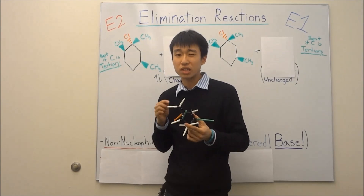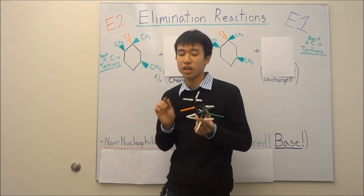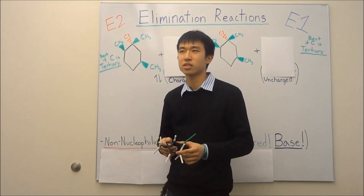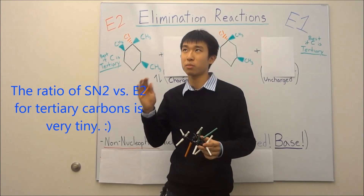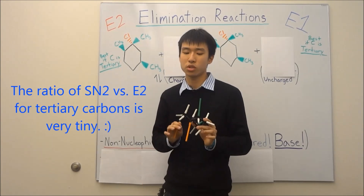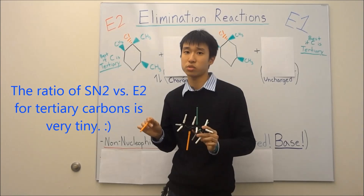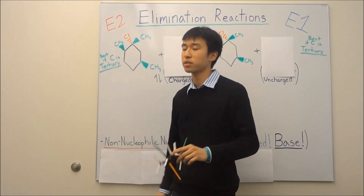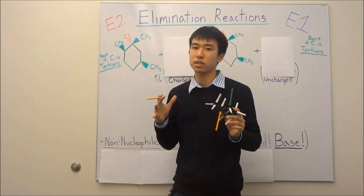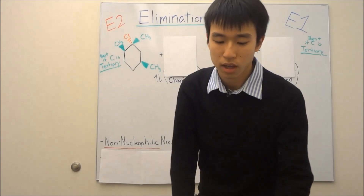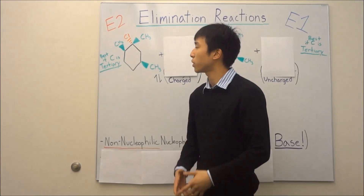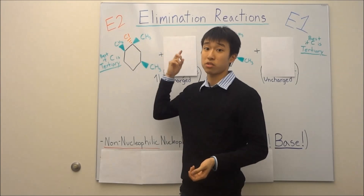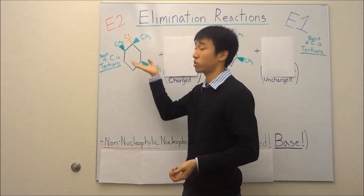So SN2 could theoretically happen on a tertiary carbon, but it's very, very rare — essentially a negligible probability. You're usually taught not to worry about SN2 reactions when you have a tertiary carbon, because it's so blocked up. That's basically one of the key circumstances for elimination reactions: having a tertiary carbon.